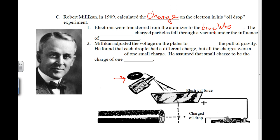The negatively charged particles fell through a vacuum under the influence of gravity. Millikan adjusted the voltage on the plates to offset the pull of gravity. He found that each droplet had a different charge, but all the charges were a multiple of one small charge. He assumed that small charge to be the charge of one electron.